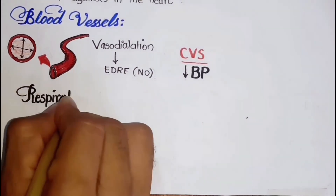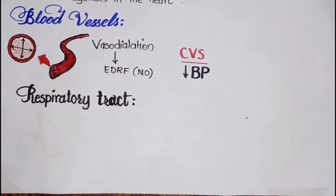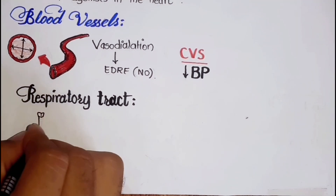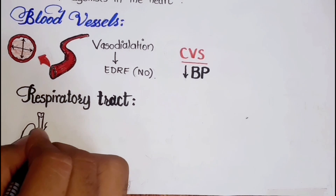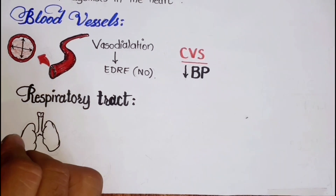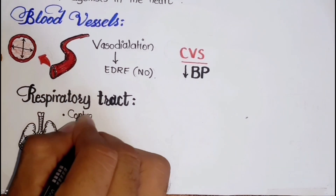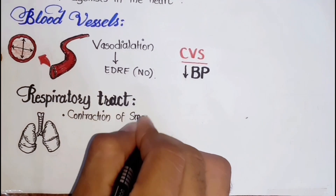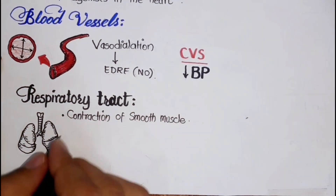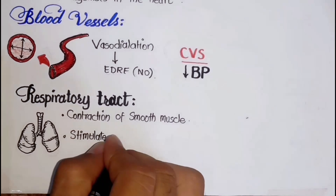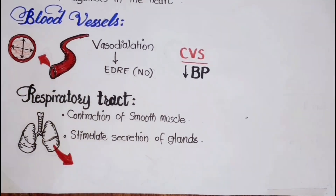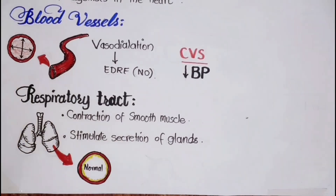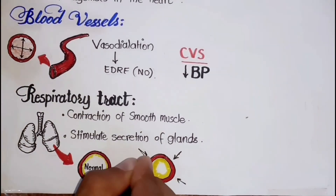The respiratory tract also responds to parasympathomimetics. The effects of direct acting cholinomimetics include the contraction of bronchial smooth muscles and stimulation of the secretion of tracheobronchial glands. These effects cause the airways of the lungs to become narrow.